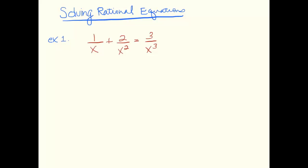Now I will show you an example where that might not be the best idea, but for now, let's make our common denominator x cubed. On this first fraction, I would multiply it by x squared over x squared. The second, I would multiply it by x over x, and the third fraction already has that denominator of x cubed. So now let's combine our expressions. We get x squared plus 2x over x cubed equals 3 over x cubed.